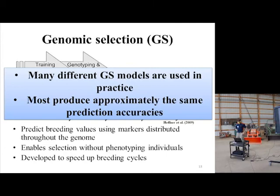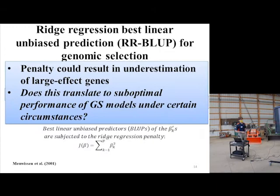Putting on my statistician hat, there are many different genomic selection models used, and most of them produce approximately the same results. This is a standard model. Our Y variables are traits, and if we have key markers throughout the genome, those are all included in the model. Then of course you have our error term and our intercept.